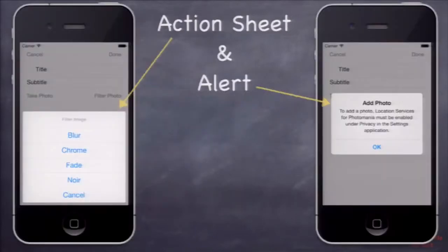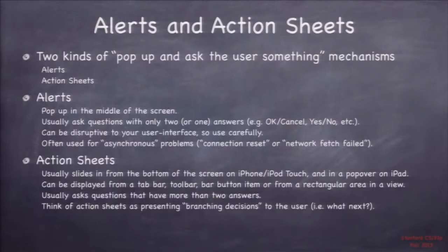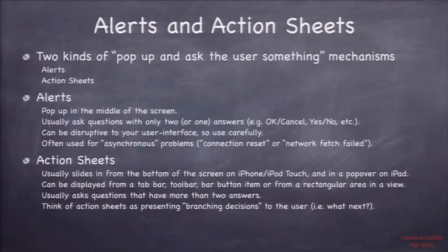The last topic before the demo is action sheets and alerts. These pop up on screen to alert the user of something or to give them a branching decision. Action sheets are for branching decisions; alerts are to alert them of something or get a simple piece of information. They have very similar APIs but are used in different circumstances. Don't overuse alerts — it's nicer for users to just click on something and start typing rather than having an alert pop up every time you need information.